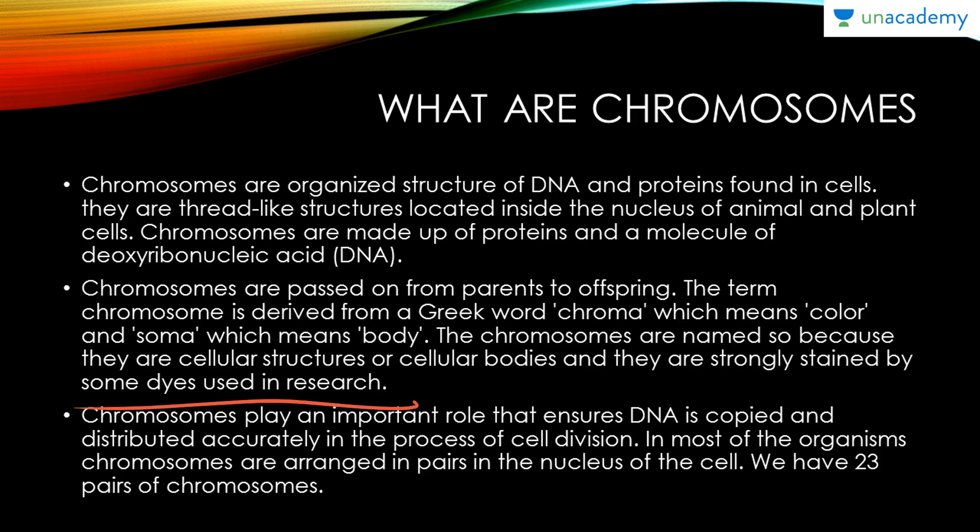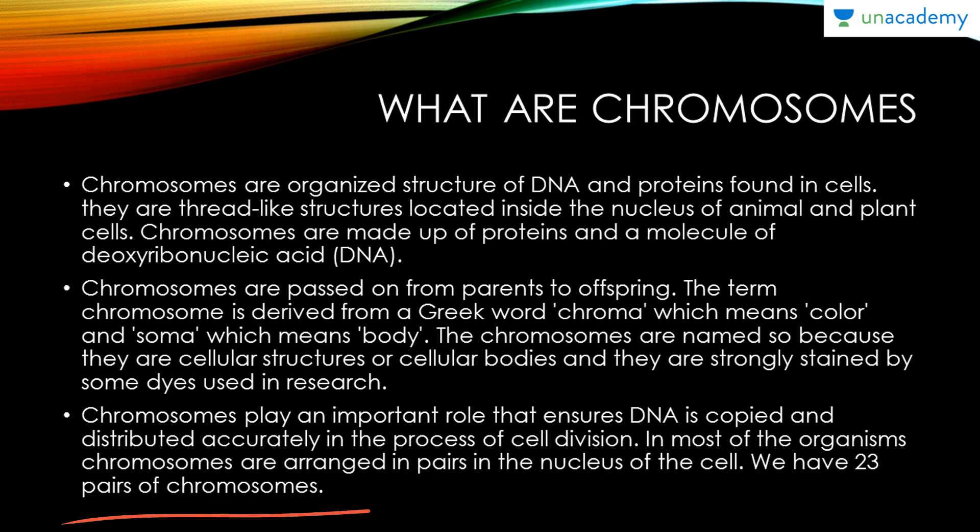Chromosomes play an important role in ensuring that DNA is copied and distributed accurately during cell division. In most organisms, chromosomes are arranged in pairs in the nucleus. Humans have 23 pairs of chromosomes, making a total of 46.